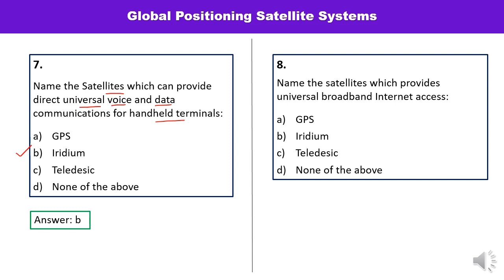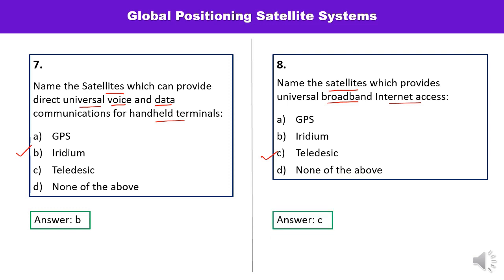Question number eight: Name the satellite which provides universal broadband internet access. The options are GPS, Iridium, Teledesic, or none of the above. C — Teledesic — is the correct answer, as this satellite provides universal broadband internet access. Keep these applications in mind.